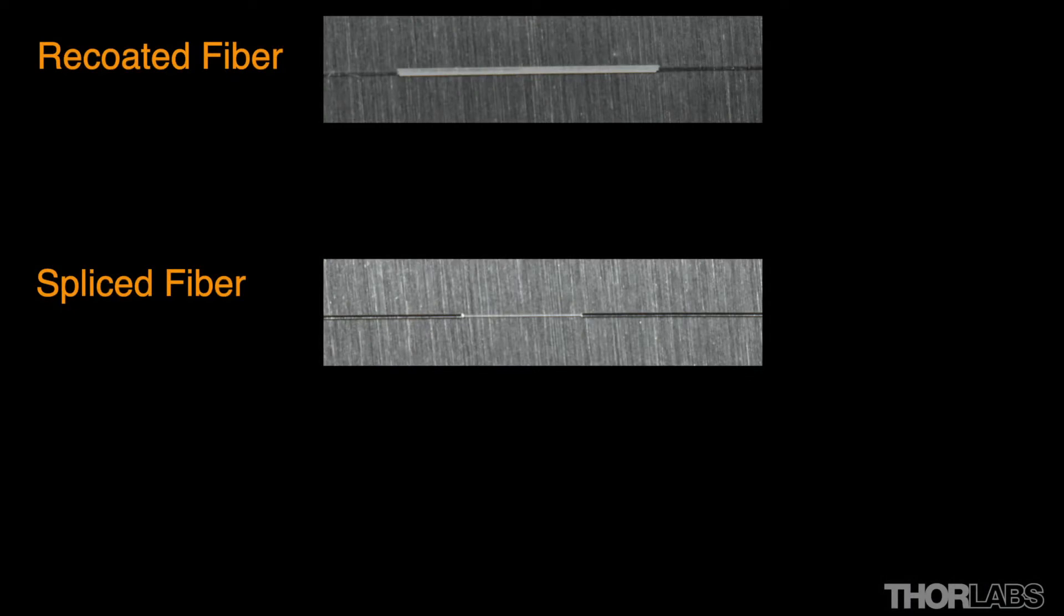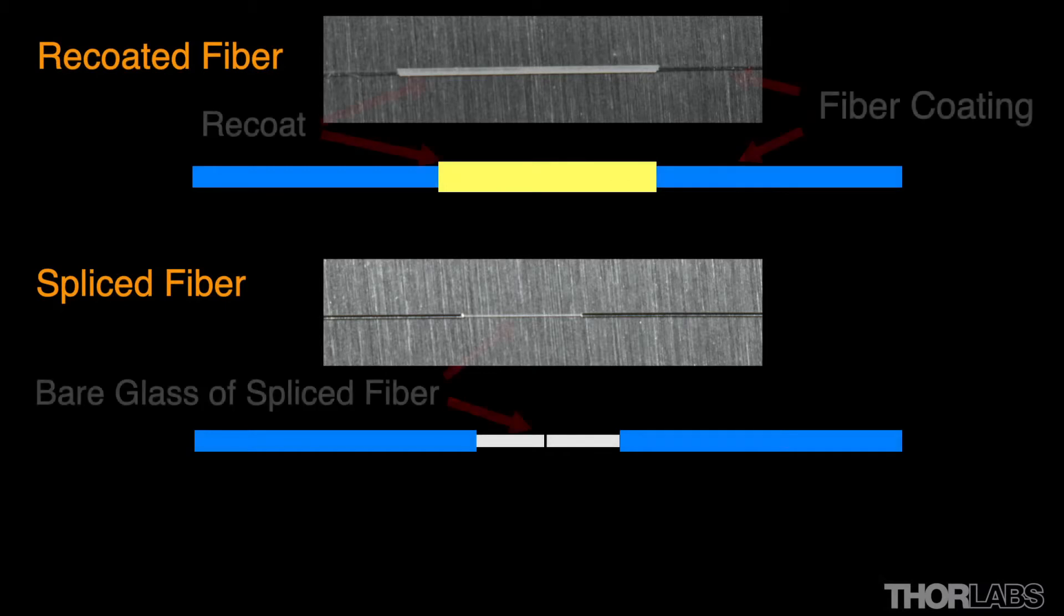Checking that splices pass a minimum strength requirement is usually performed after the fibre has been recoated, if this is being carried out.